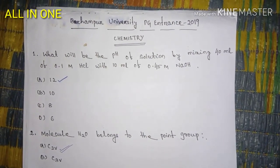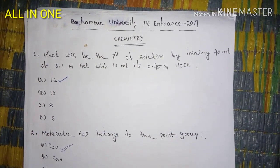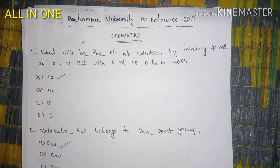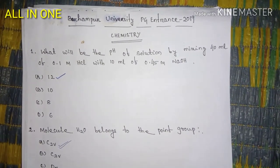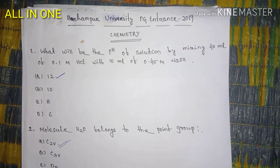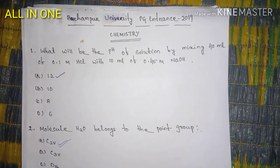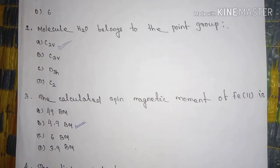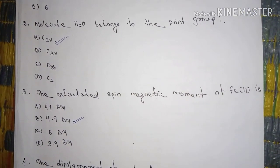Question number one is what will be the pH of solution by mixing 40 ml of 0.1 mol HCl with 10 ml of 0.45 mol NaOH? The answer is 12.